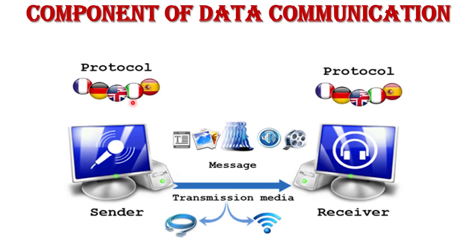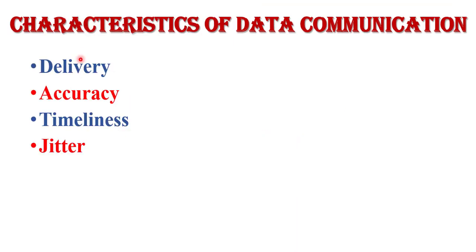Examples of wireless transmission media are microwaves, Bluetooth, and mobile communication. The last and most important component of data communication is protocol. Protocol is basically a set of rules or regulations that govern data communication, or we can say it is a set of rules used by sender and receiver to communicate data. A protocol is necessary in data communication — without it, communication is not possible.